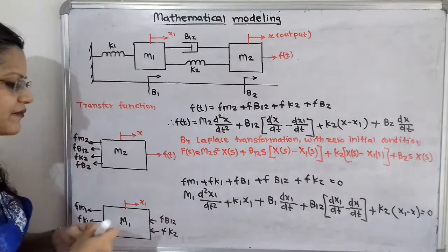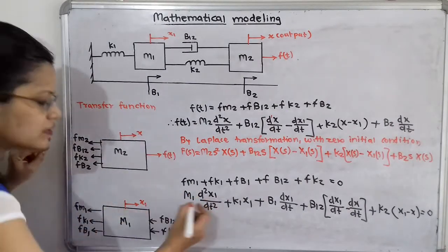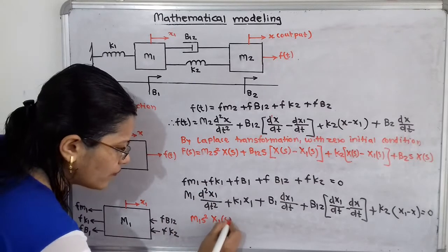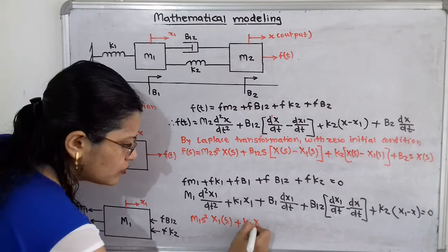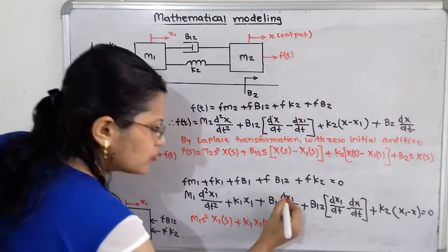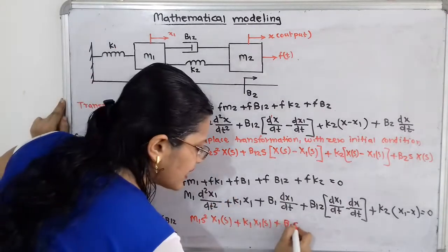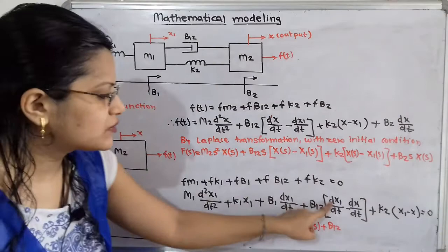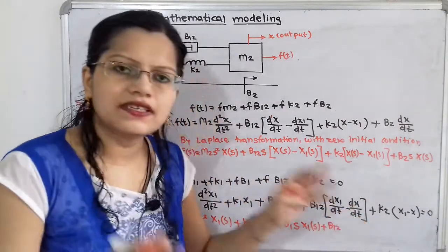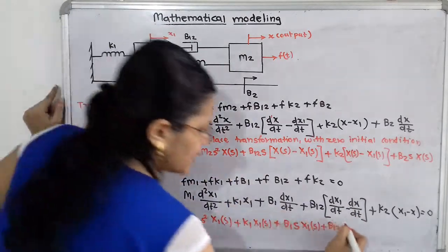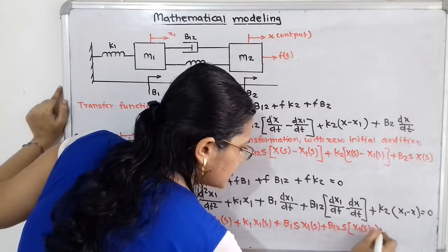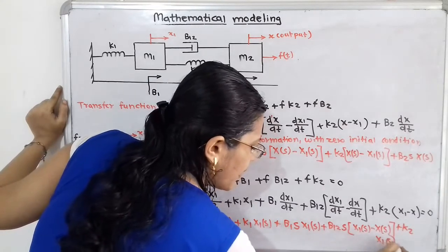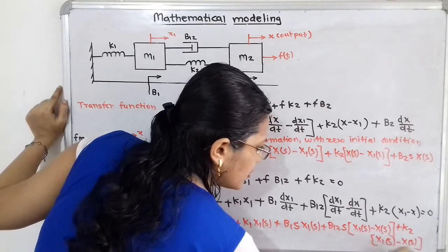Taking Laplace transformation with zero initial conditions: M1·S²·X1(S) + K1·X1(S) + B1·S·X1(S) + B12·S·[X1(S) − X(S)] + K2·[X1(S) − X(S)] = 0.